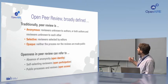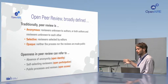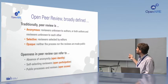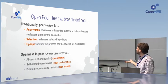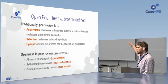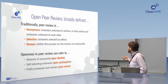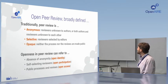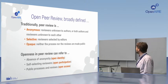For me, open peer review is an umbrella term. Traditionally, peer review is anonymous — at least usually single or double blind. It's selective in that reviewers are usually selected by editors. And it's opaque in that neither the reviews nor the process are made public. My conception of open peer review is any type of new peer review that changes one of these factors to tackle a perceived problem. So openness in peer review means either absence of anonymity — open identity — or self-selecting reviewers meaning open participation, or public processes and public reviews — open access peer review.